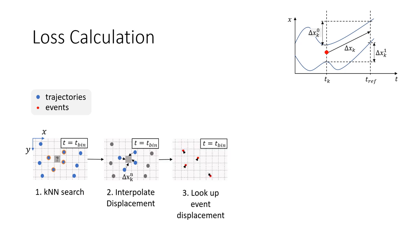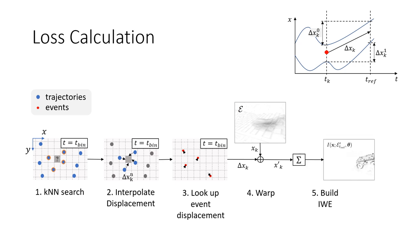Afterwards, we can simply lookup the per-event displacement. Warped events are obtained by adding events and displacements and summed per pixel to obtain the image of warped events. The inverse of its gradient magnitude is returned as the loss value.